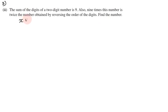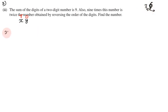The number is a 2-digit number. This is the units digit and this is the tens digit. If you add the digits — for example 3 and 8, or 6 — the sum is 9. So x plus y equals 9. This is equation 1.